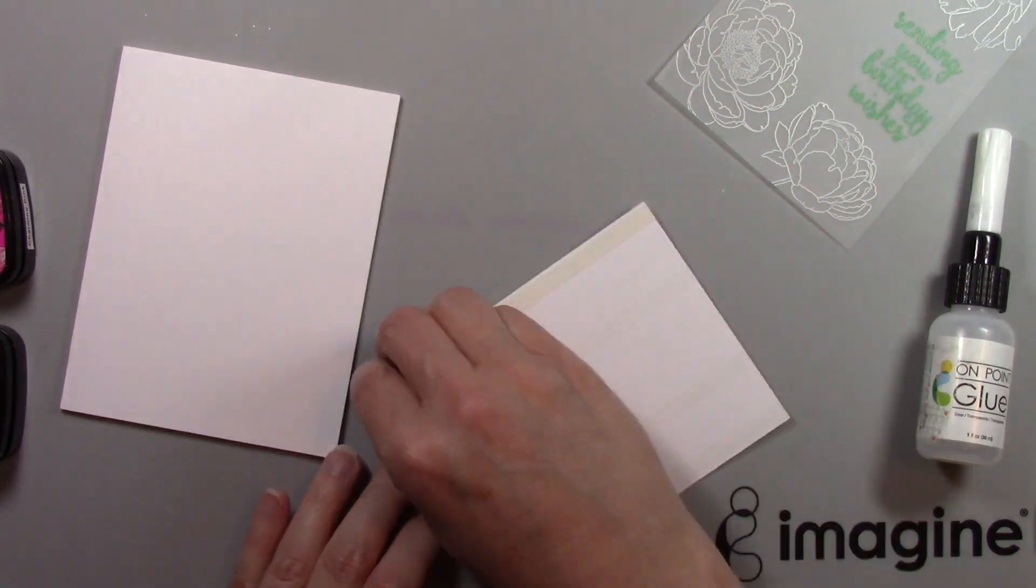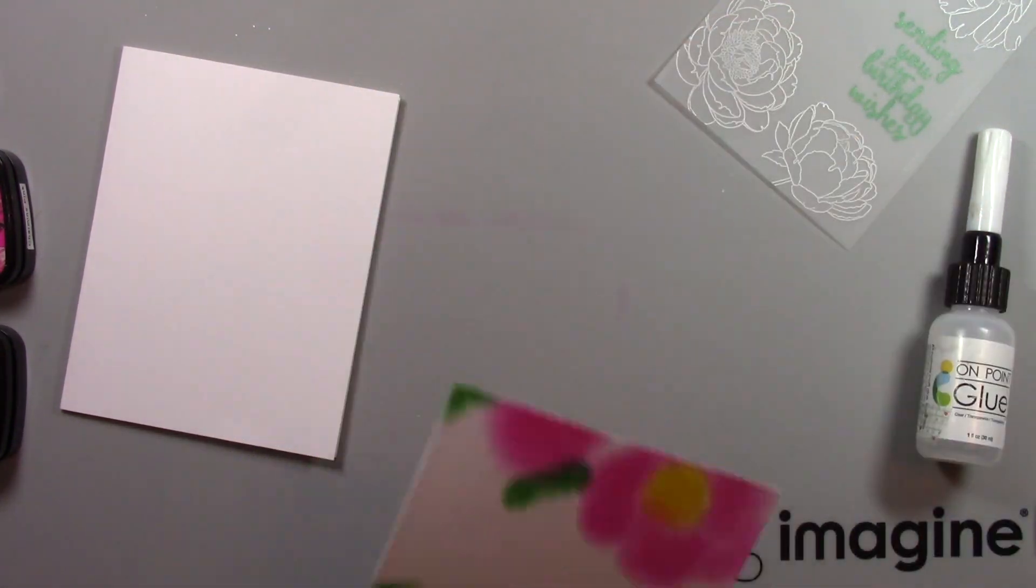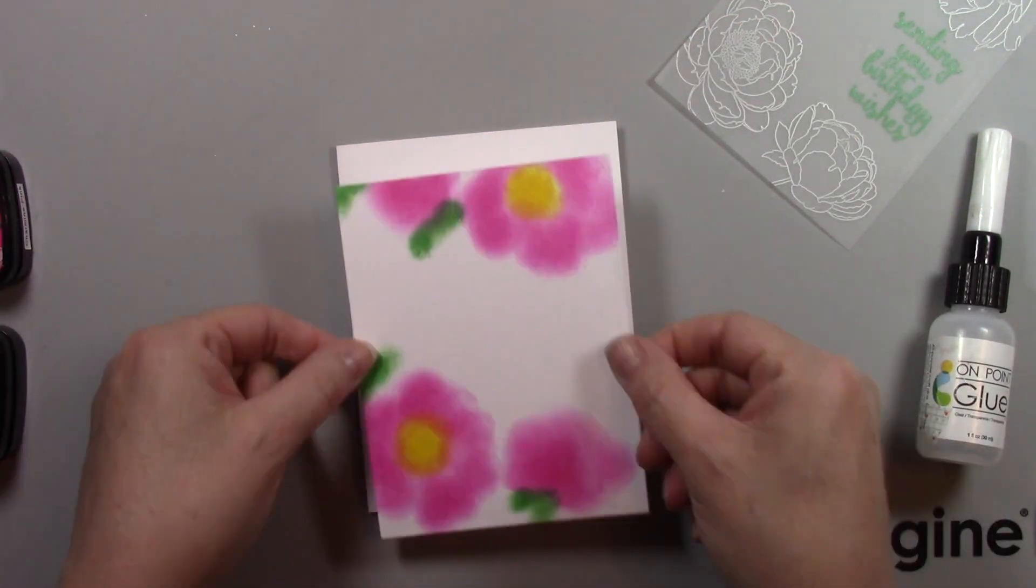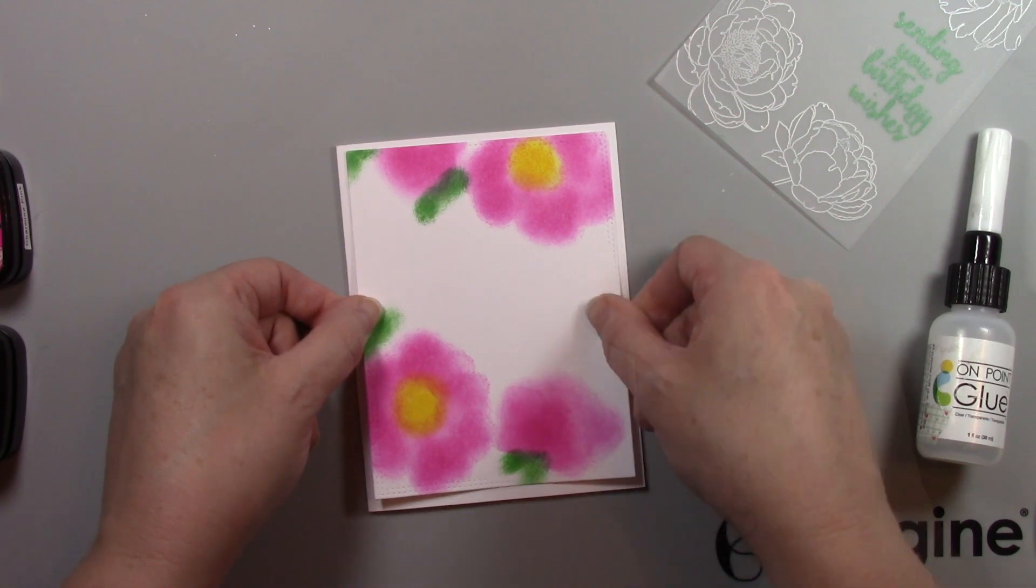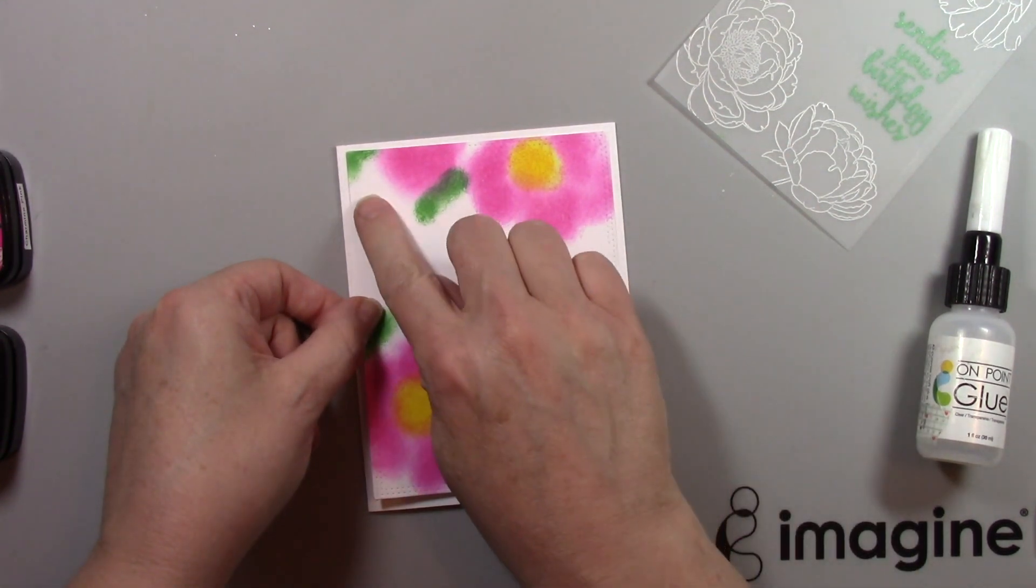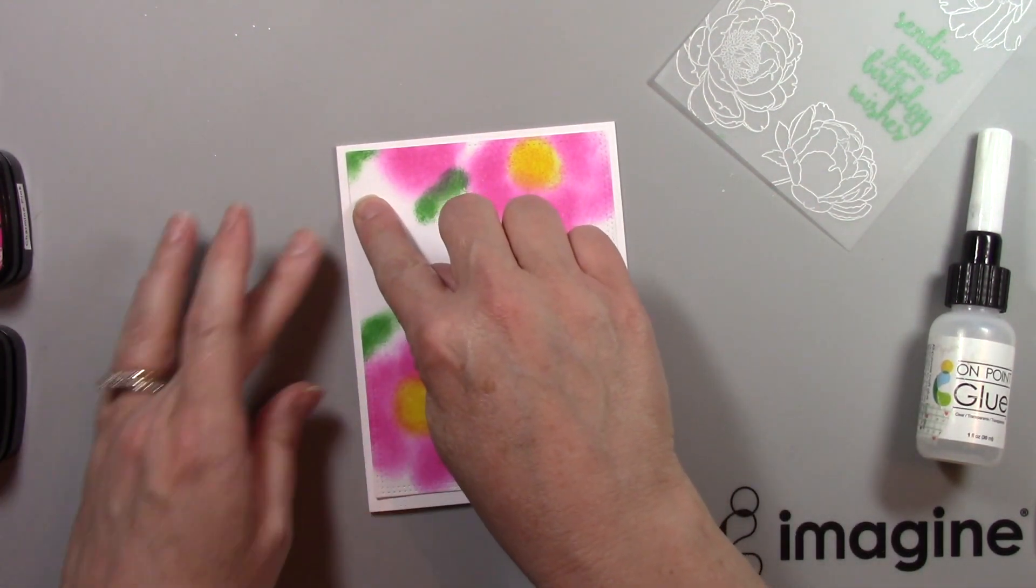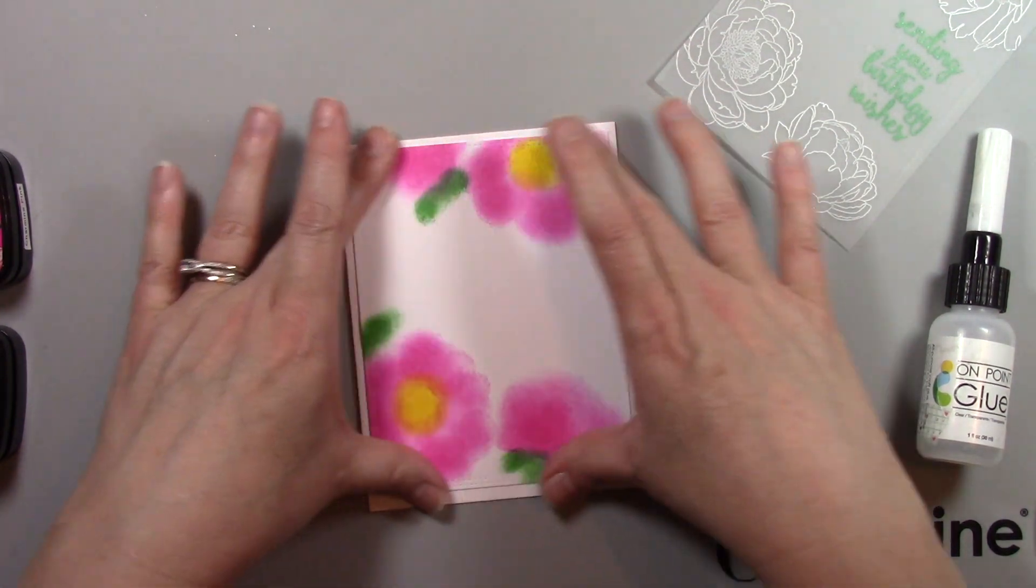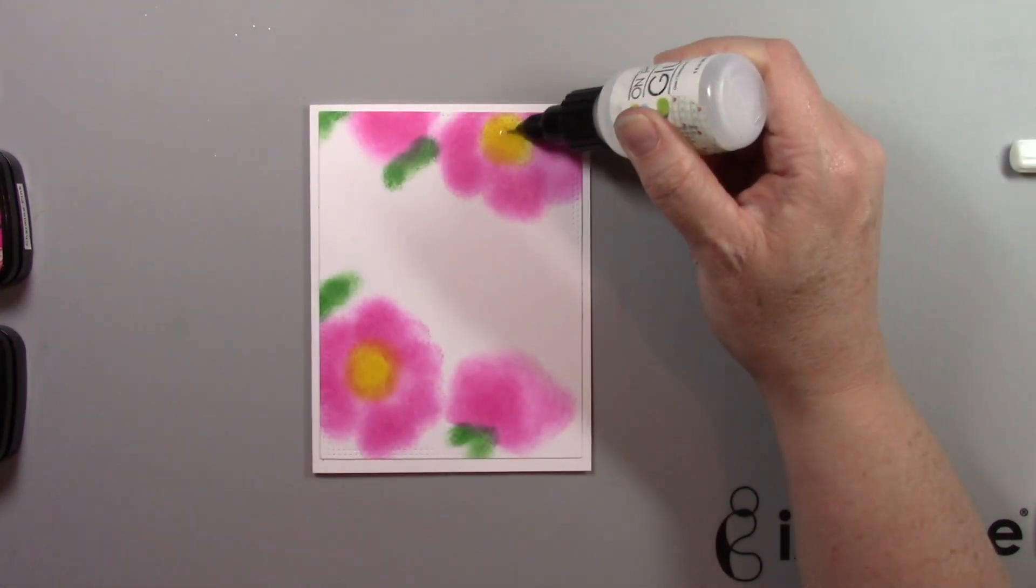There are other adhesives on the market that don't work quite so well but I assure you that once it's down it is down and it will not lift off of your card. This happens to be an A2 size card. I did have a little extra on the bottom that I ended up trimming off as I cut the card just a little too big.